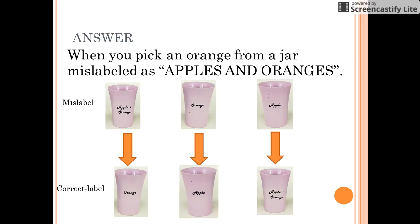Let us see how. We will start with the jar which is mislabeled as apples and oranges. Suppose when you pick a fruit, you get an orange from it. Now you have surety that oranges could be present in only two jars: the apple and orange jar and the orange jar. Since this is an incorrect label, the only possibility left is to change this label from apple and orange to orange. Now the orange jar must be labeled as apple, and the apple jar must be labeled as apple and orange.